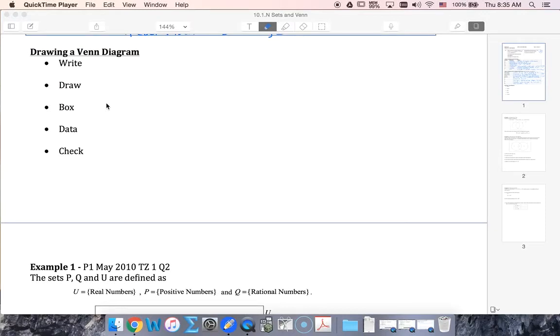All right, so a Venn diagram gives us a visual representation of different number sets.